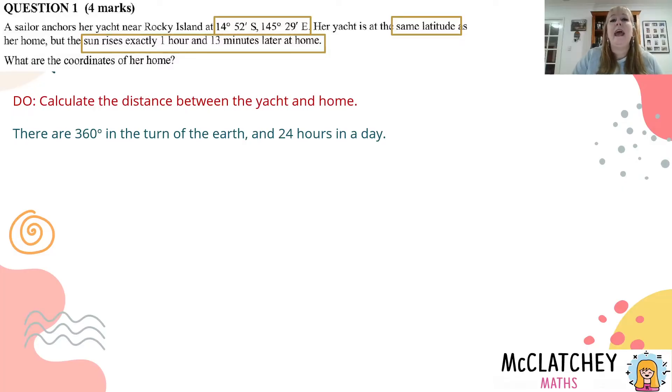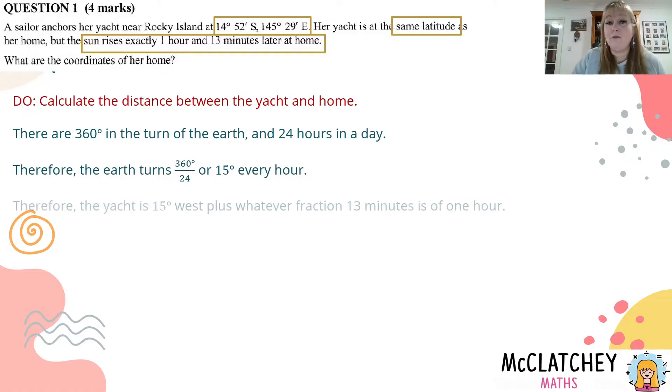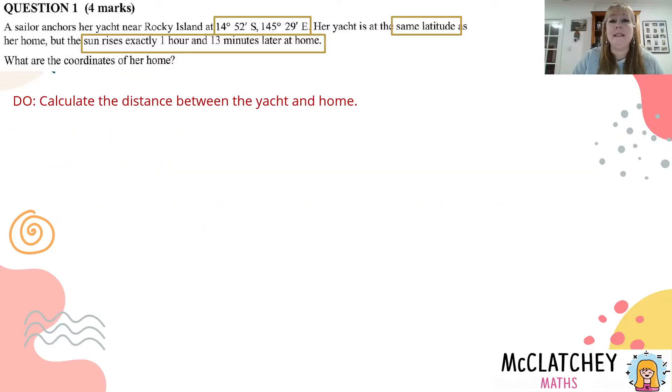So we can work out how far the earth turns in an hour. Even if you can't remember it, it's easy to work out: 360 degrees divided by 24 hours gives us 15 degrees that the earth turns every hour. So we know that because her house is an hour and 13 minutes later, there's at least 15 degrees. We've got 15 degrees west plus these 13 minutes, whatever fraction that 13 minutes is of one hour.